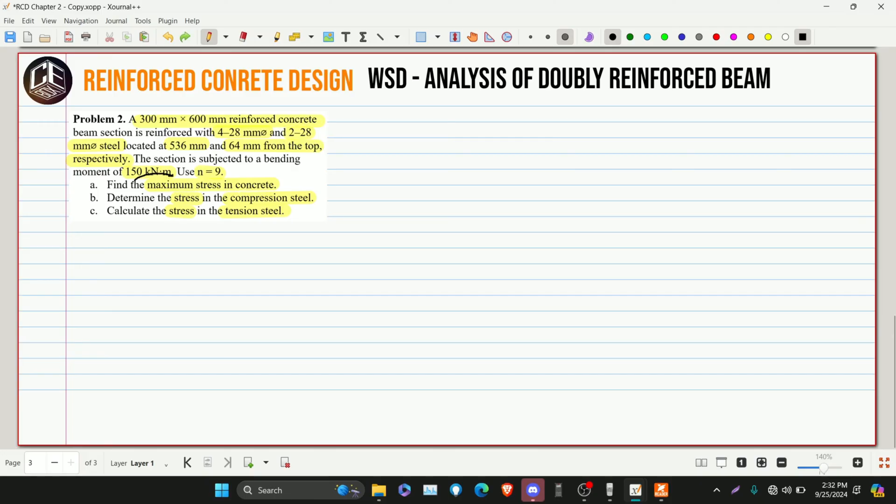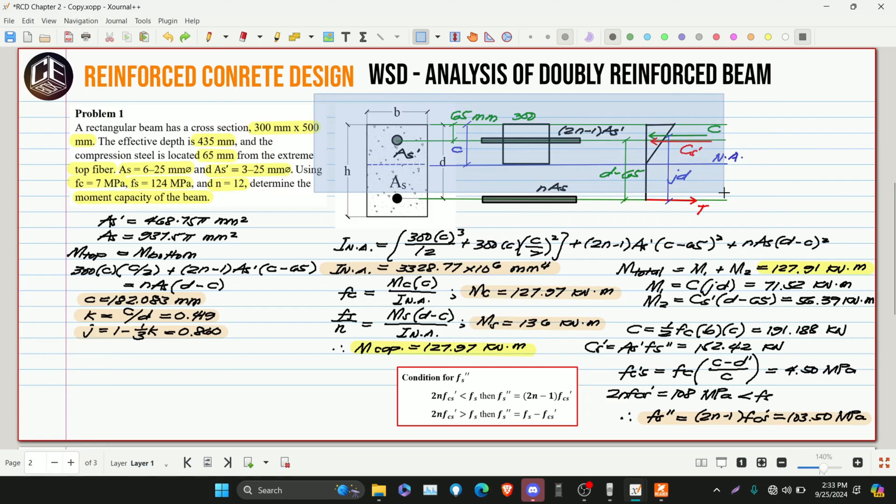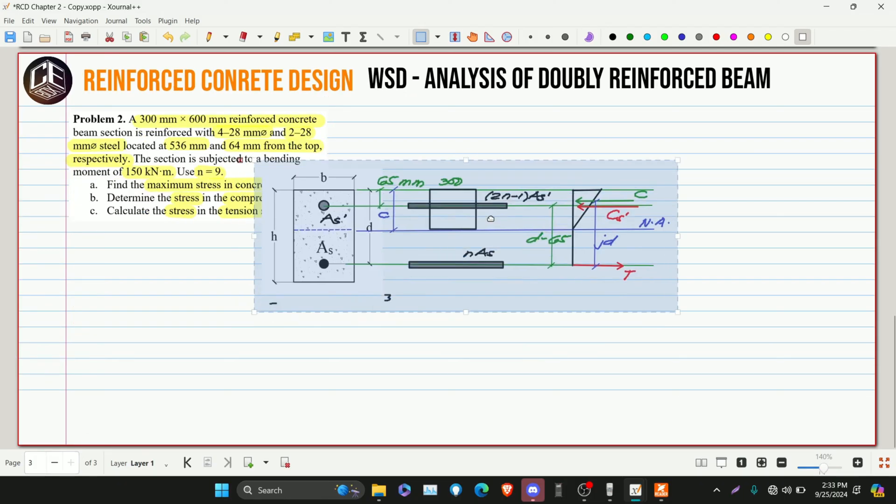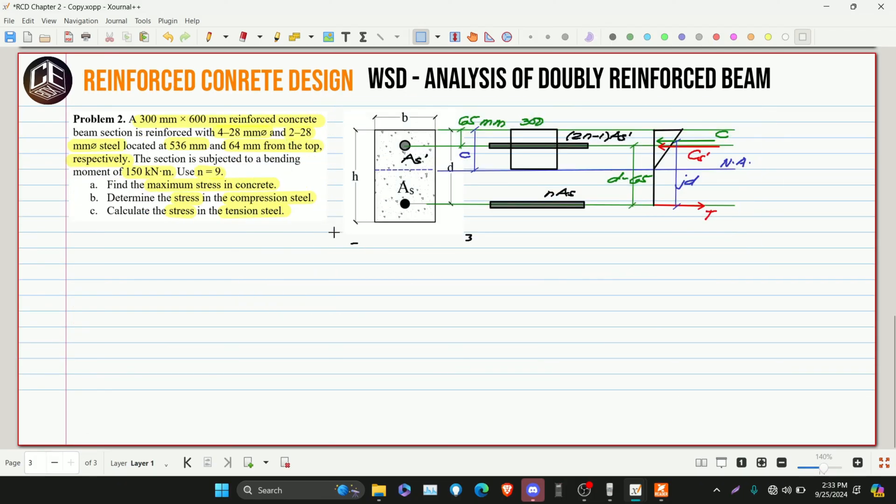We need to find the maximum stresses in concrete, compression steel, and tension steel. So if it's maximum stresses, therefore we will treat this moment as if it's the capacity of our beam. So if this is capacity, it should be a cracked section. So if it's a cracked section, let's just copy from our problem number one. We'll just copy so we won't take too long drawing the crack section and also the stress diagram.